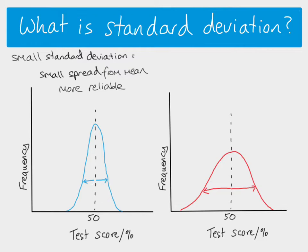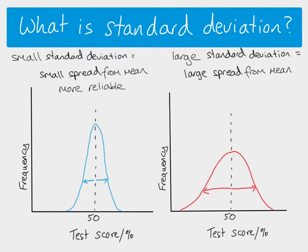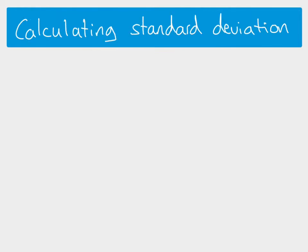If you were to calculate the standard deviation for this class, you find that you have a large standard deviation, and that tells you there's a large spread from the mean. Therefore your mean is less reliable in terms of indicating what the data is doing, because we've got a lot of data which is much smaller than the mean value and a lot of data which is much larger. So standard deviation tells you about the spread of your data from the mean.